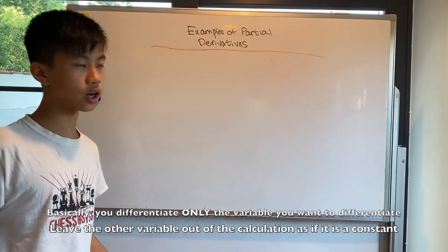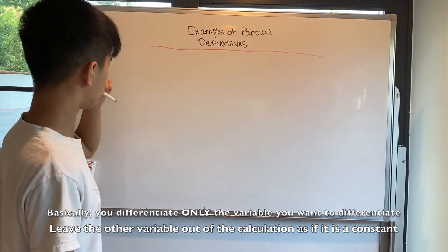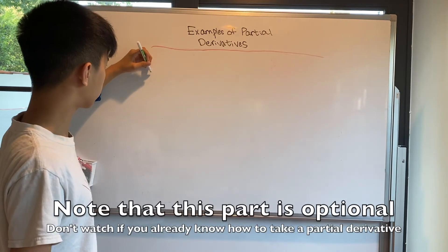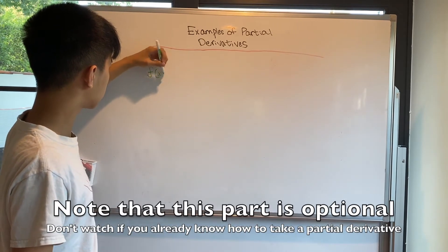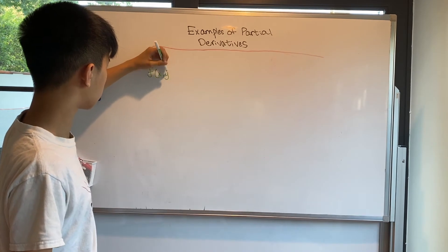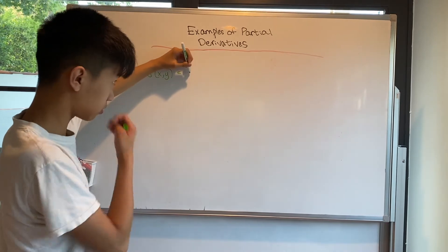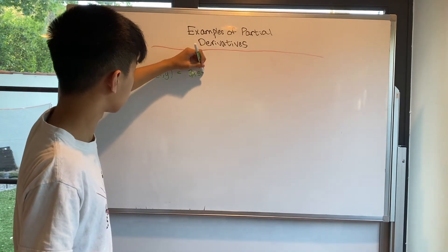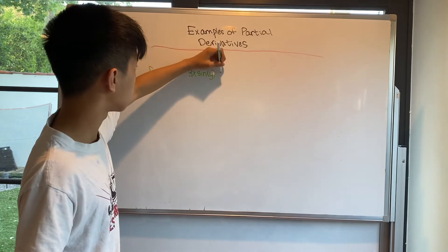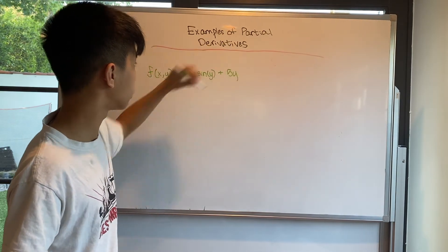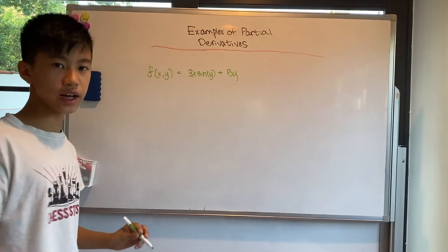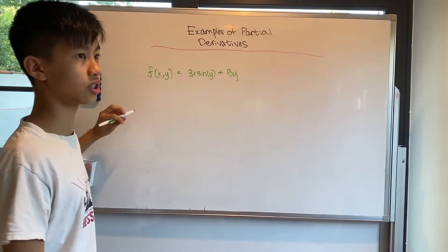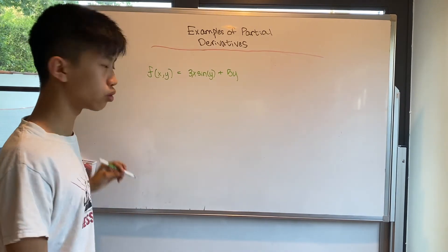Let's review how to take partial derivatives. So let's say I give you the function f(x, y) = 3x·sin(y) + 5y. If I asked you to take the partial derivative of f with respect to x, what would you get?